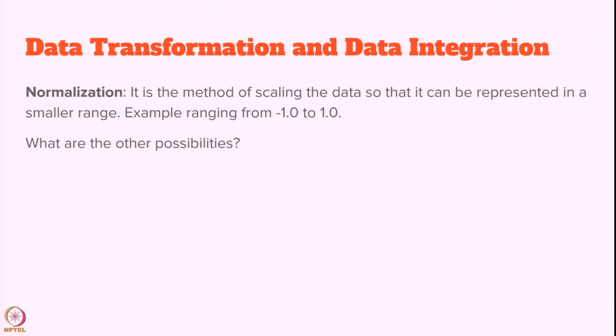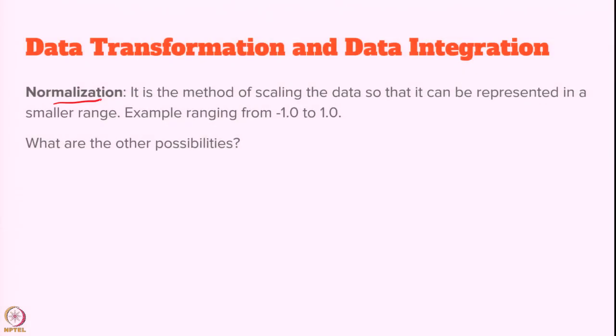Now let us go to data transformation and data integration. In data transformation, we are transforming the given data into some other format without losing or modifying the given information. One technique used in data transformation is normalization — the method of scaling the data so that it can be represented in a smaller range, say from minus 1 to 1. Normalization is not the only technique; there are various other possibilities we will discuss in detail.